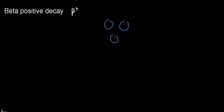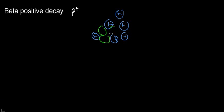One, two, three, four, five, six protons — and some neutrons. This is carbon, and you can already see it's the carbon-11 isotope because it has eleven total nucleons for the mass number.